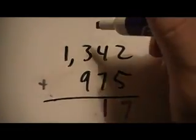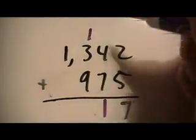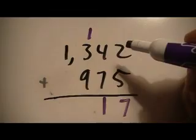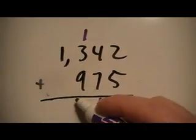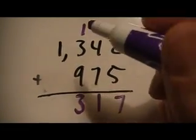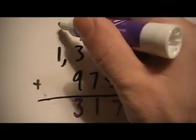Take the ten tens, that carry, that regroups to one hundred. Then nine hundred plus one hundred is a thousand, plus three hundred is one thousand three hundred. Three hundred stays in the hundreds spot, and we regroup the ten hundreds to one thousand.